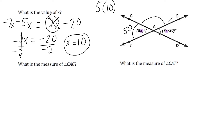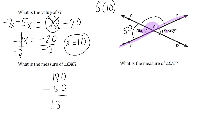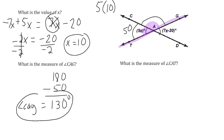The adjacent angle is going to be supplementary with this 50-degree angle because they form a straight angle — this angle and this angle have a total sum of 180 degrees. So we take 180 and subtract 50, and that leaves us with 130 degrees. That is the measure of angle CAG — it's equal to 130 degrees.